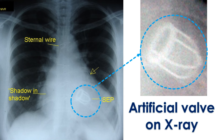Mitral regurgitation can be treated with medications which reduce the load of the left ventricle by enlarging the peripheral blood vessels. When the peripheral blood vessels are enlarged, more blood is pumped out than what leaks back, reducing the load on the left ventricle. If the disease is progressive and medications do not bring relief, the mitral valve can be either repaired or replaced.